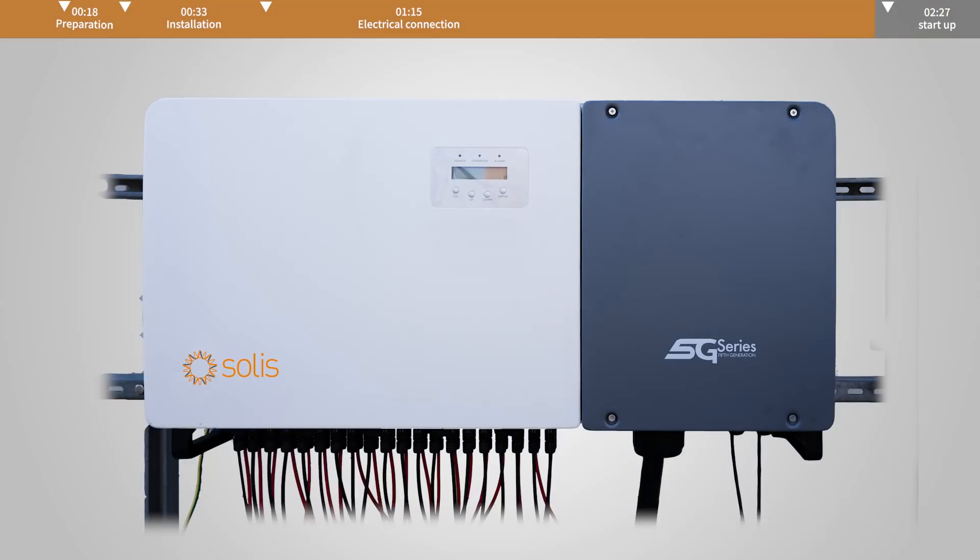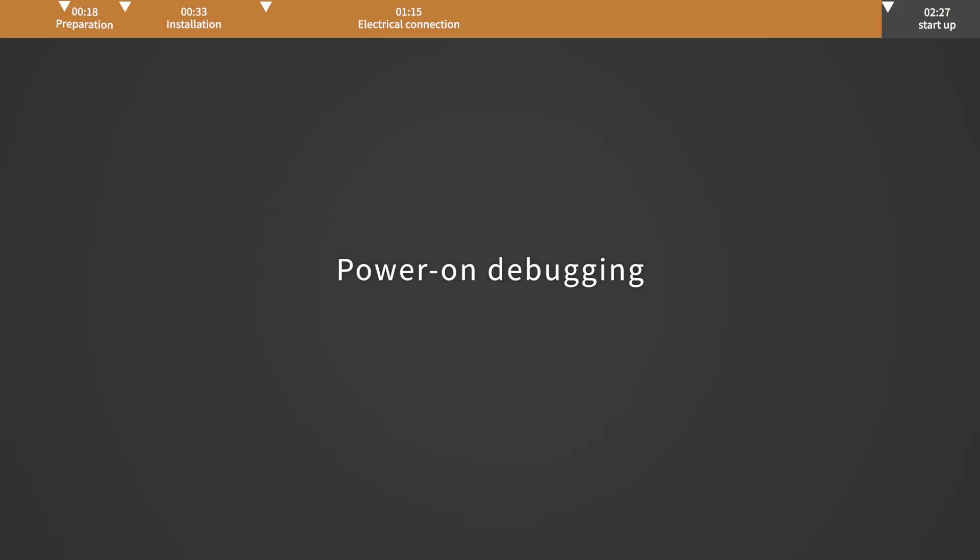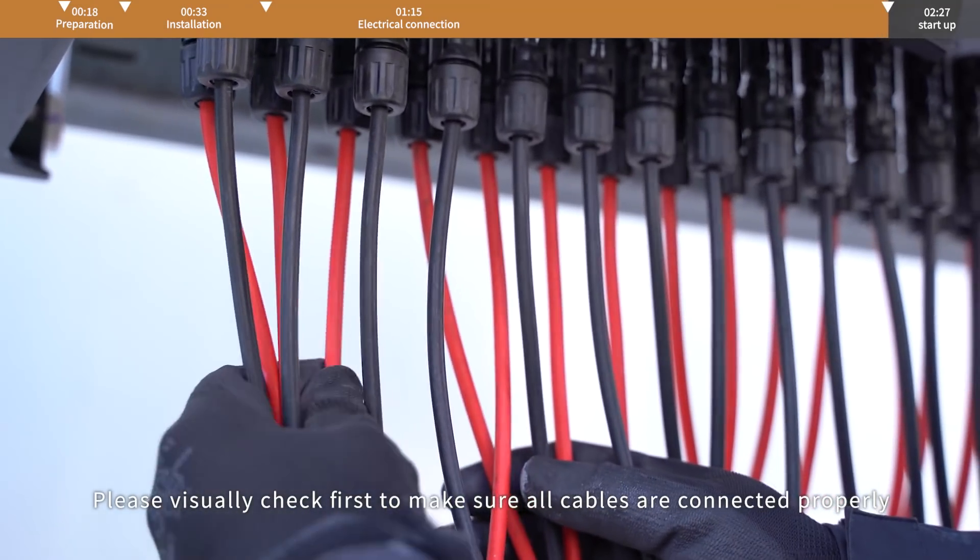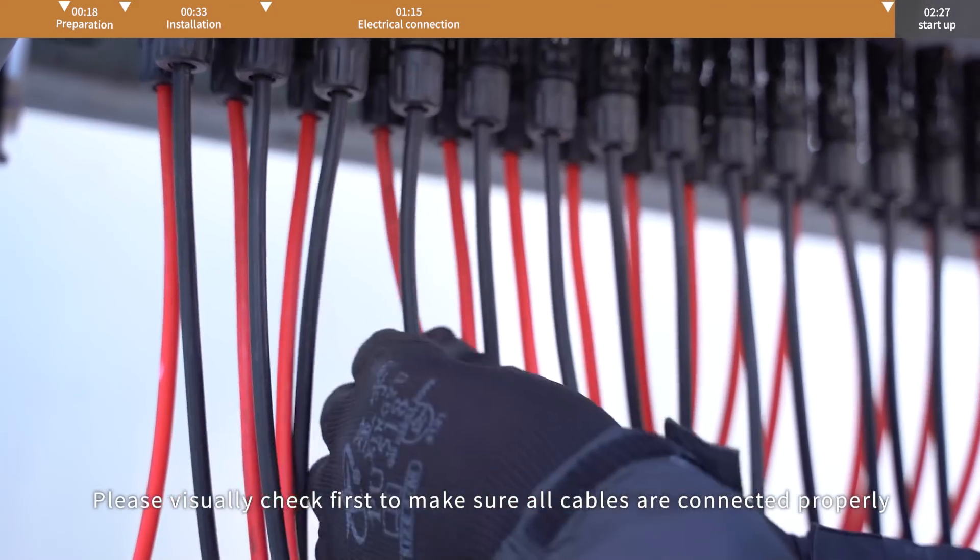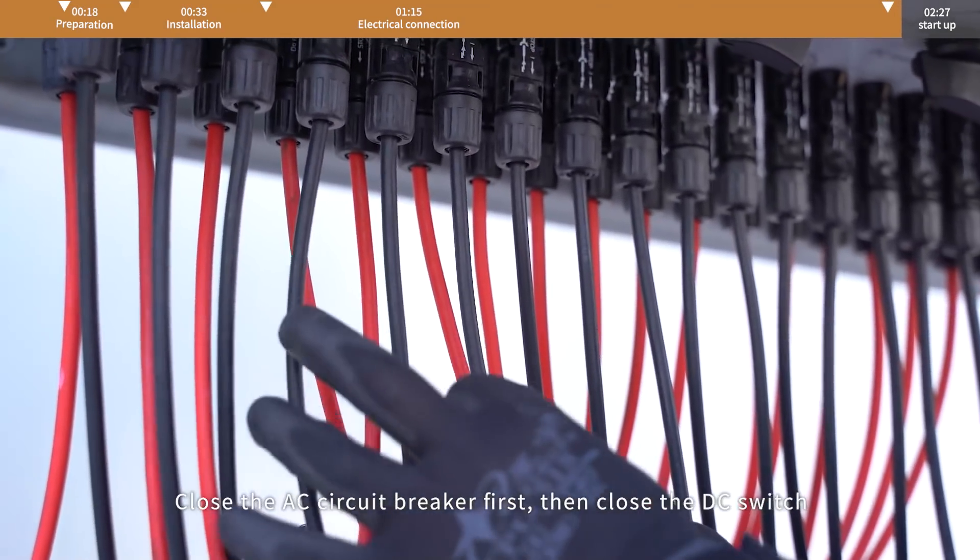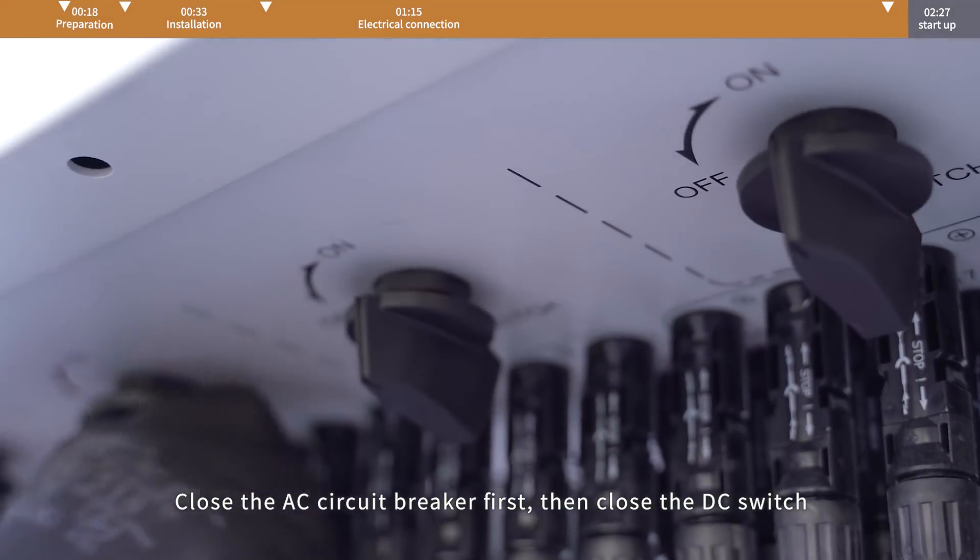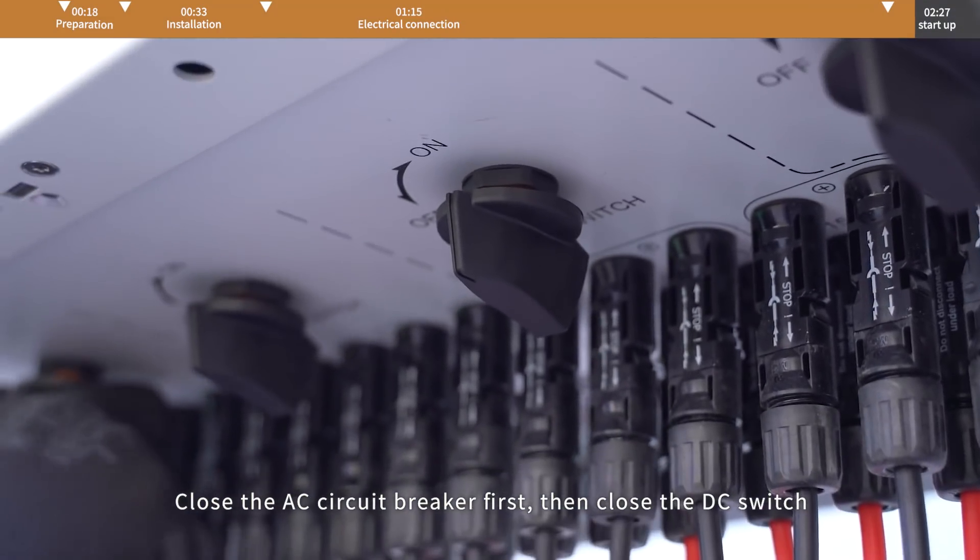Cable connection finishes. Power on debugging. Please visually check first to make sure all cables are connected properly. Close the AC circuit breaker first, then close the DC switch.